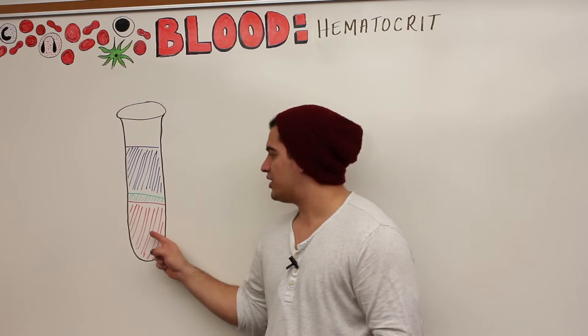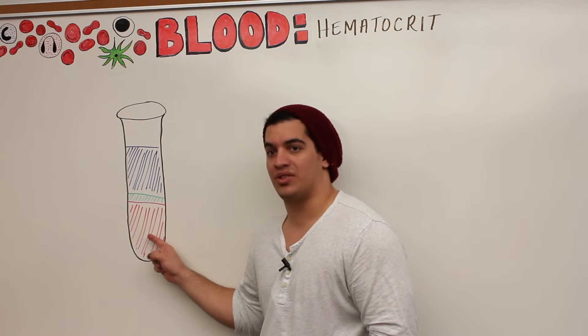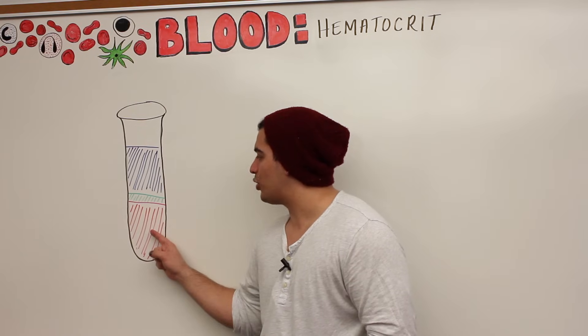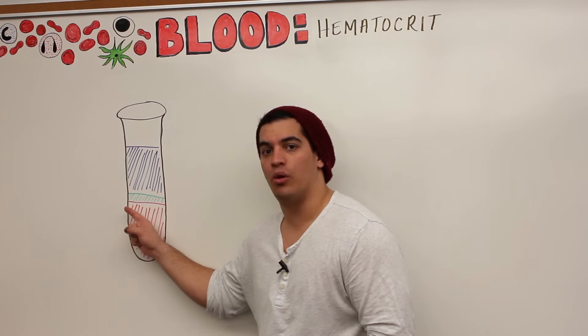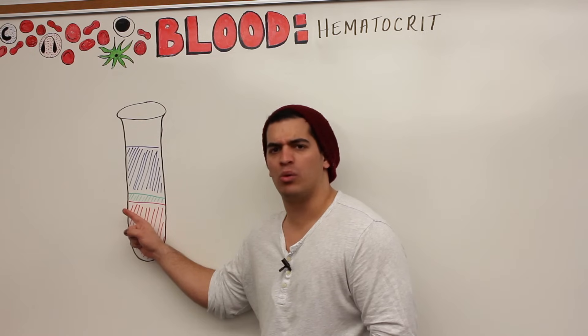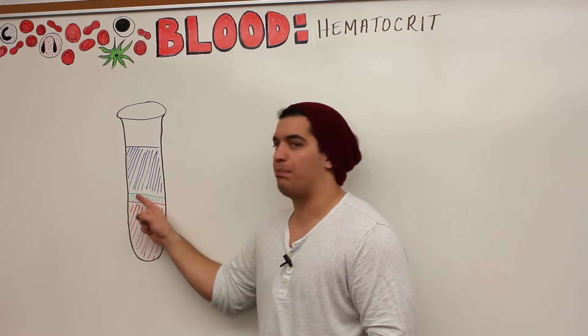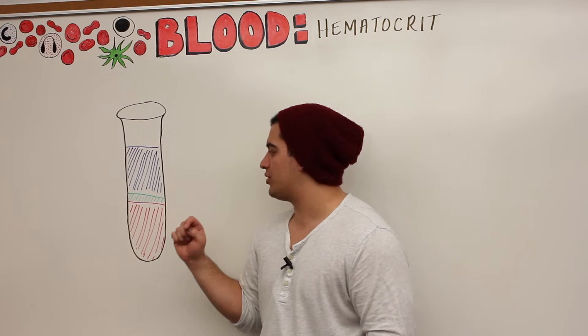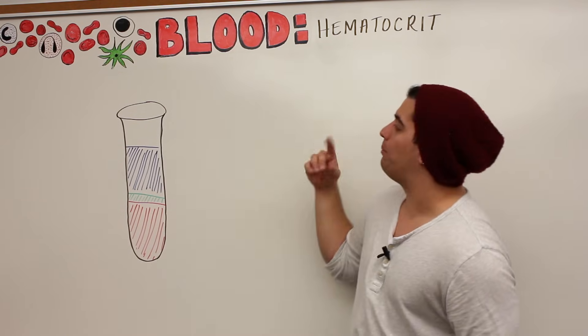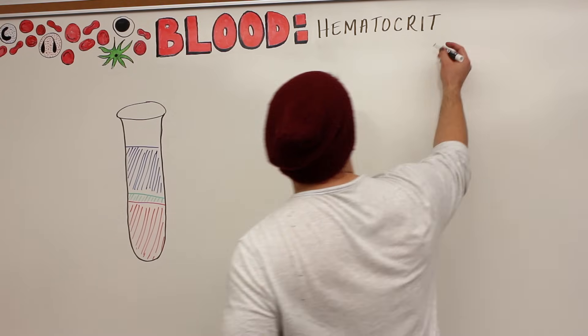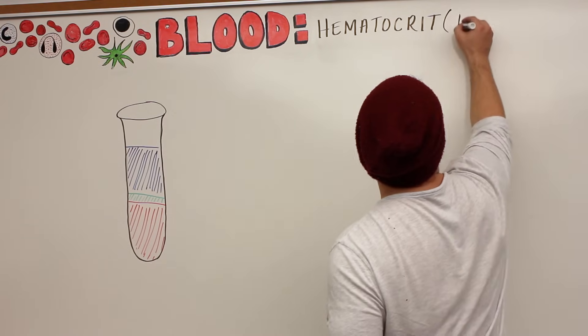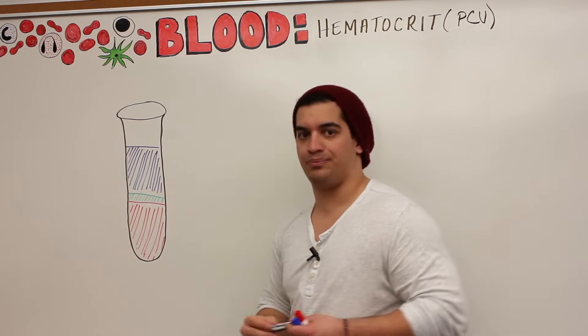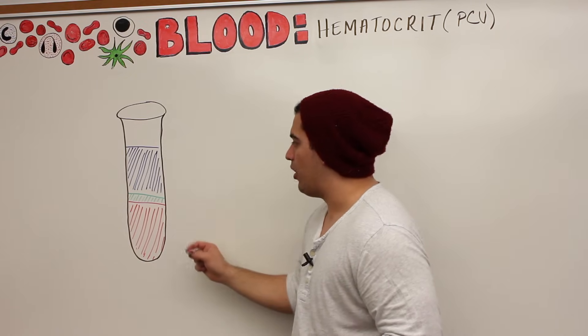What you're going to see is three distinct layers. This layer here on the bottom is the most dense component and that's your erythrocyte layer. This green layer sandwiched in between the plasma and the red blood cell layer is called the buffy coat. And then this blue layer is called the plasma. So again, what is hematocrit? Another name for it is called packed cell volume, or PCV which stands for packed cell volume.